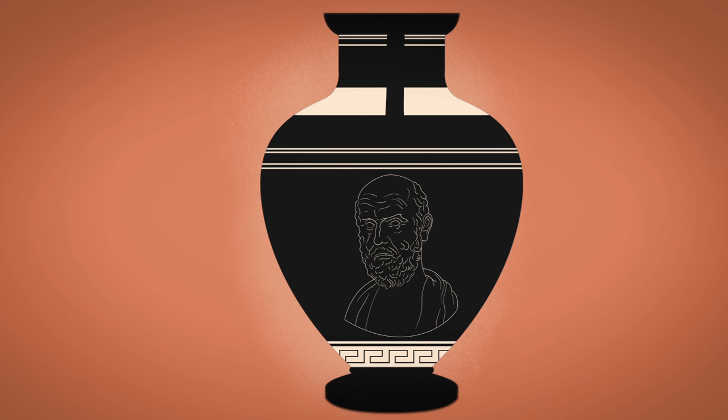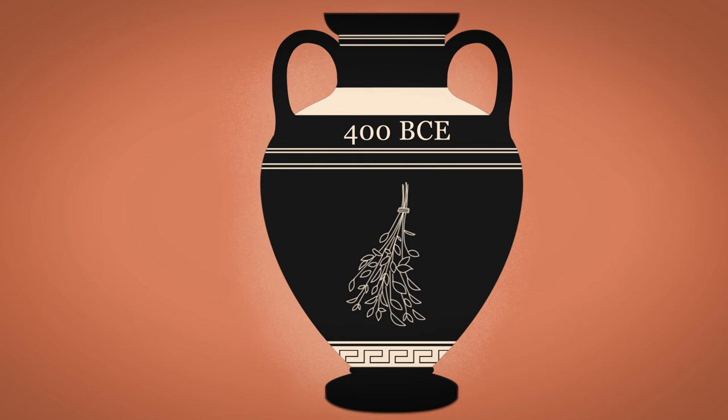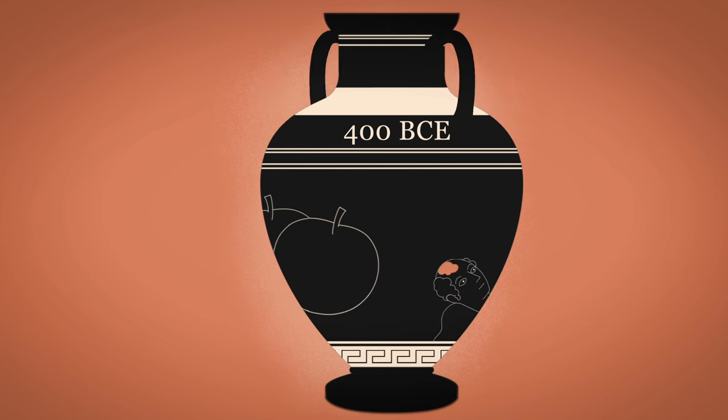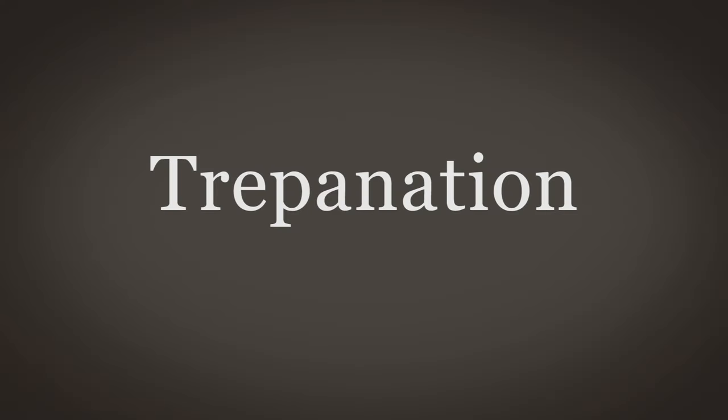Hippocrates identified the brain as the source of seizures around 400 BCE. However, this insight didn't immediately lead to better treatments. Generally, ancient Greeks prescribed medicinal herbs and alterations in diet. If they believed the seizure was caused by bleeding in the skull, they sometimes employed a technique called trepanation.